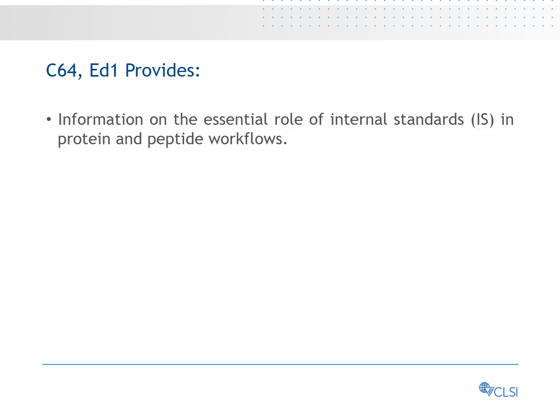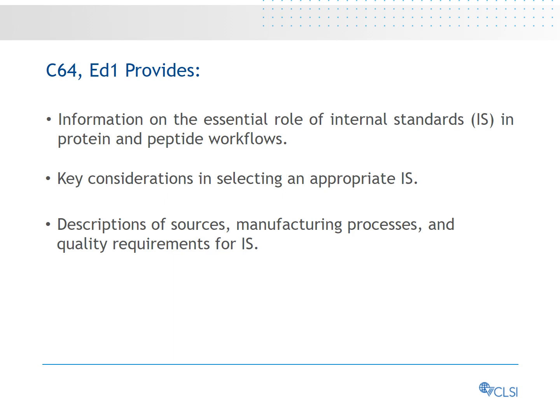Internal standards are used to control test variability arising from process variations and matrix effects between specimens and calibrators. They can be either synthetic or recombinantly expressed. Synthetic internal standard peptides are generated using solid phase chemistry, joining individual amino acids, natural or modified, in series. Expressed internal standards are proteins and peptides produced in engineered bacteria, yeasts, mammalian cell culture, or cell-free protein production systems. Sample processing requirements dictate the selection of an appropriate internal standard in a quantitative protein or peptide LC-MS assay. The test developer needs to consider the quality of the peptides with respect to chemical purity, isotopic purity, and delta mass, as well as storage.